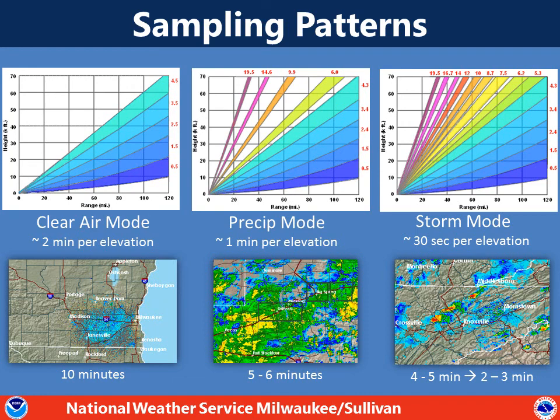There are various sampling patterns that the radar does, a few of them shown here. When you have a situation where there's really no rain on the radar, the radar is in what we call clear air mode. So it spends more time — it spins around slower — and it doesn't do as many elevation angles before returning down to the ground.